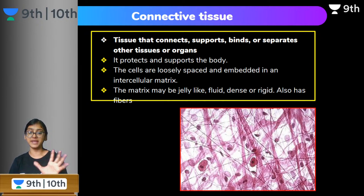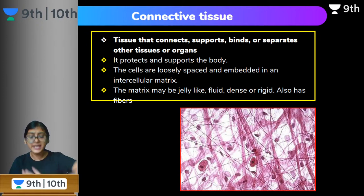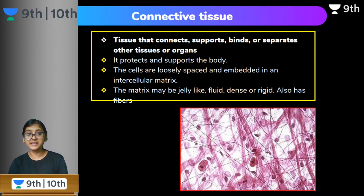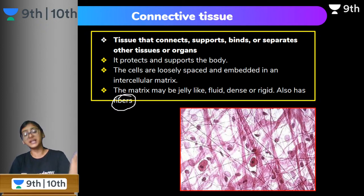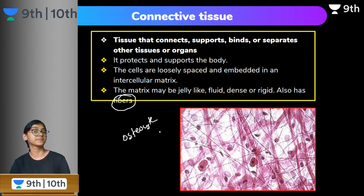Looking at an image of connective tissue, you can see some empty spaces, some elongated hair-like structures, and some oval-shaped structures. The fiber-like structures are nothing but fibers. The cells depend on the type of connective tissue — if I am talking about bone as a connective tissue, the cells present are osteocytes. If I consider adipose tissue, the cells are adipocytes. If I consider cartilage, the cells are chondrocytes.